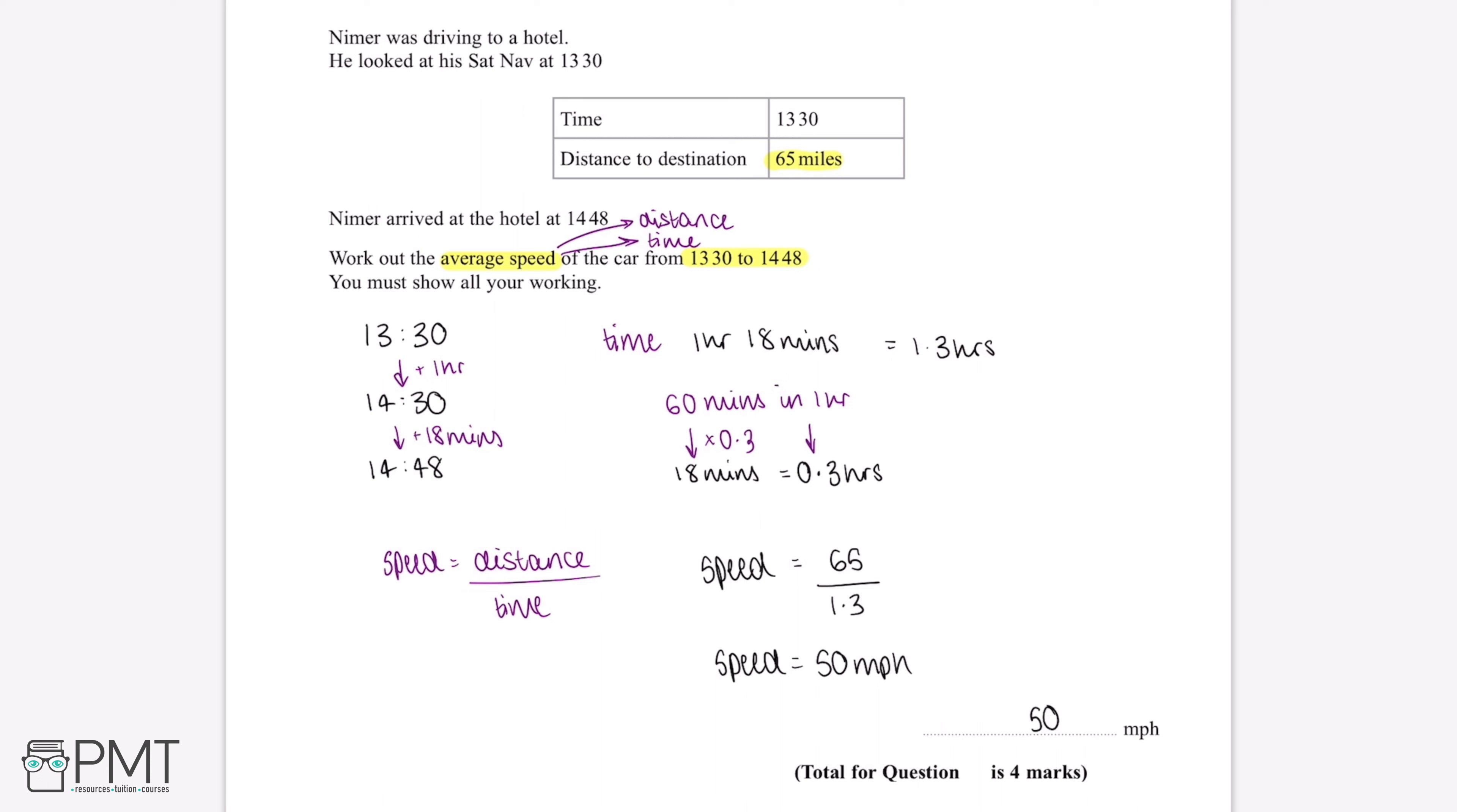This question is worth 4 marks. We'll get our first mark for working out the difference in time between 1:30 and 2:48. We'll get our second mark for converting this into hours. We'll get our third mark for substituting the values into the equation for average speed, and we'll get our fourth mark for the correct answer of 50 miles per hour.